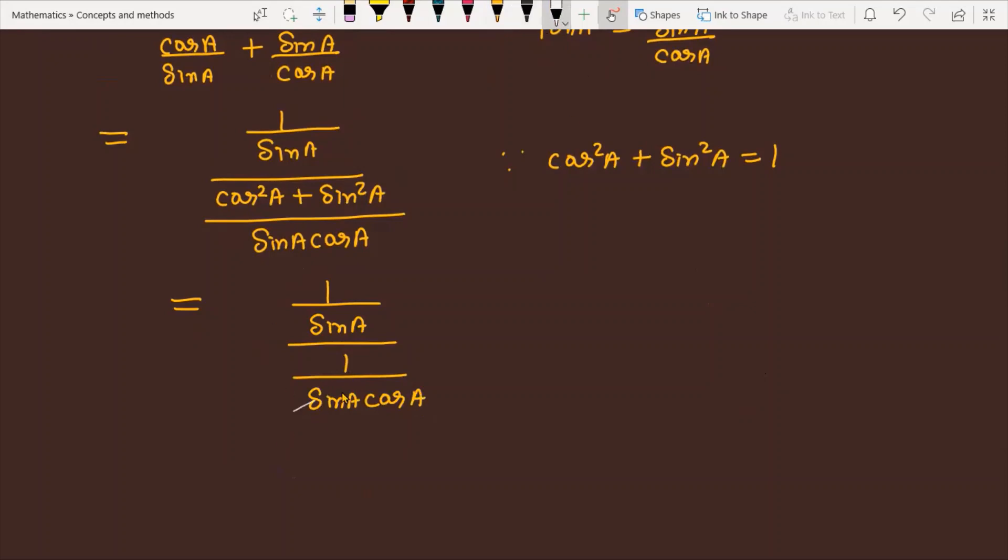Here we can easily see that sin A cancels. When we simplify further, finally we get cos A, which is our right-hand side for the given problem.